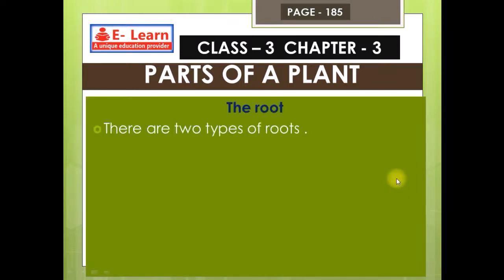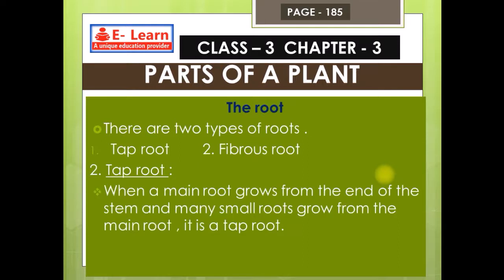There are two types of roots. Number one: tap root. Number two: fibrous root. When a main root grows from the end of the stem and many small roots grow from the main root, it is called a tap root.